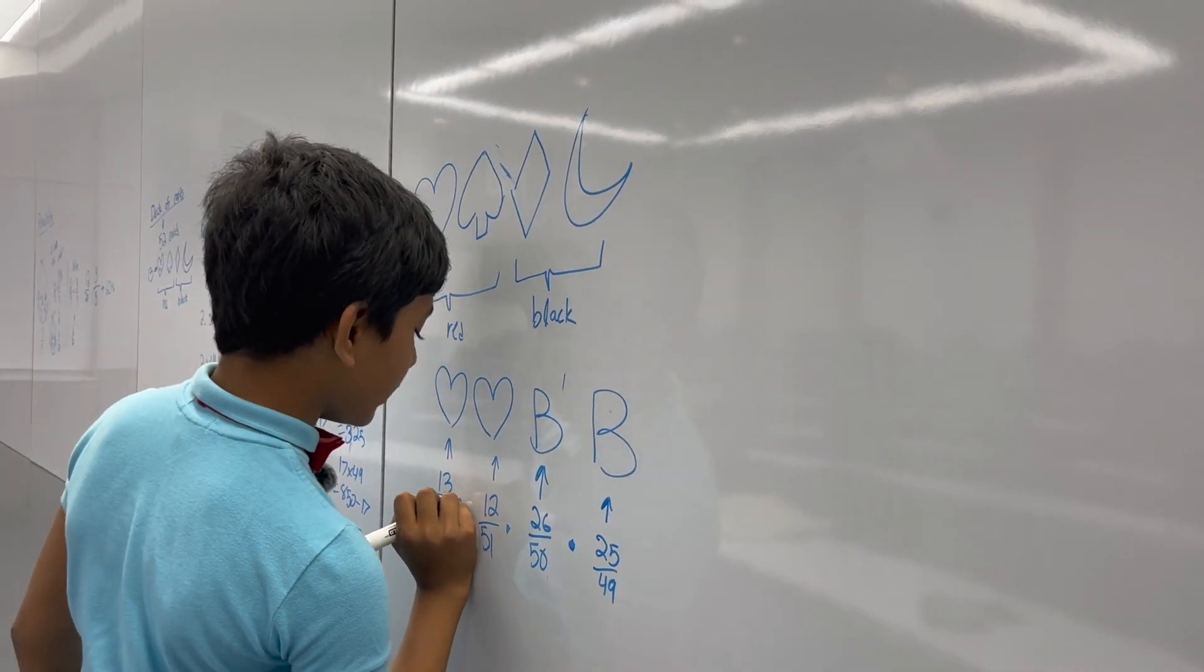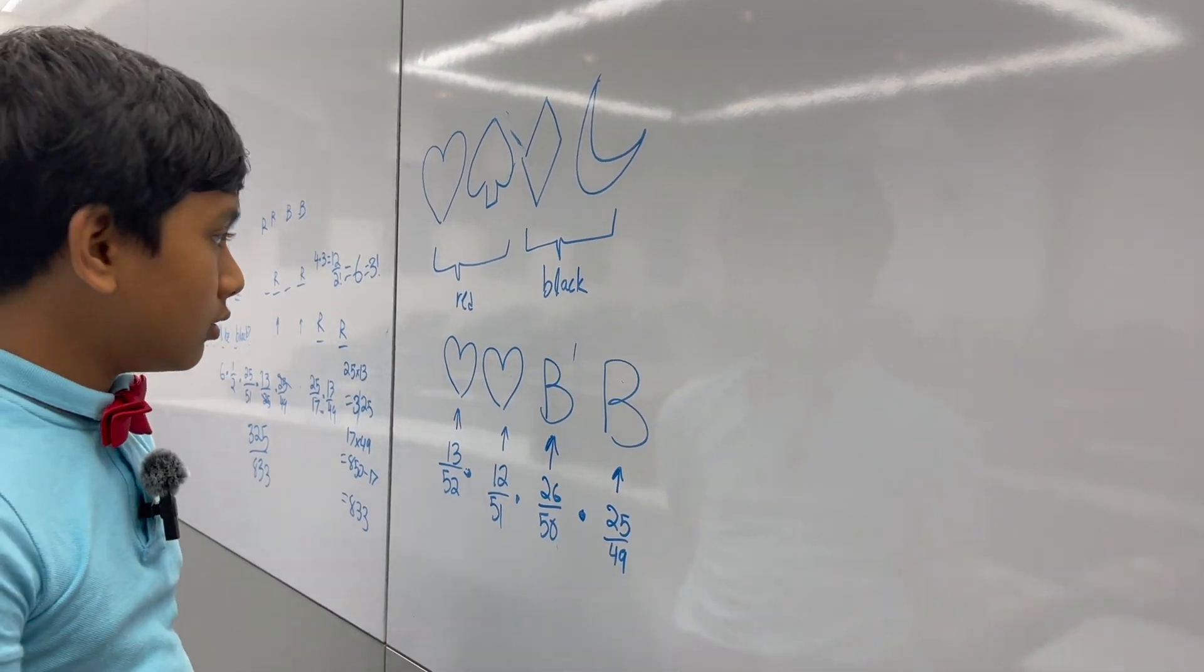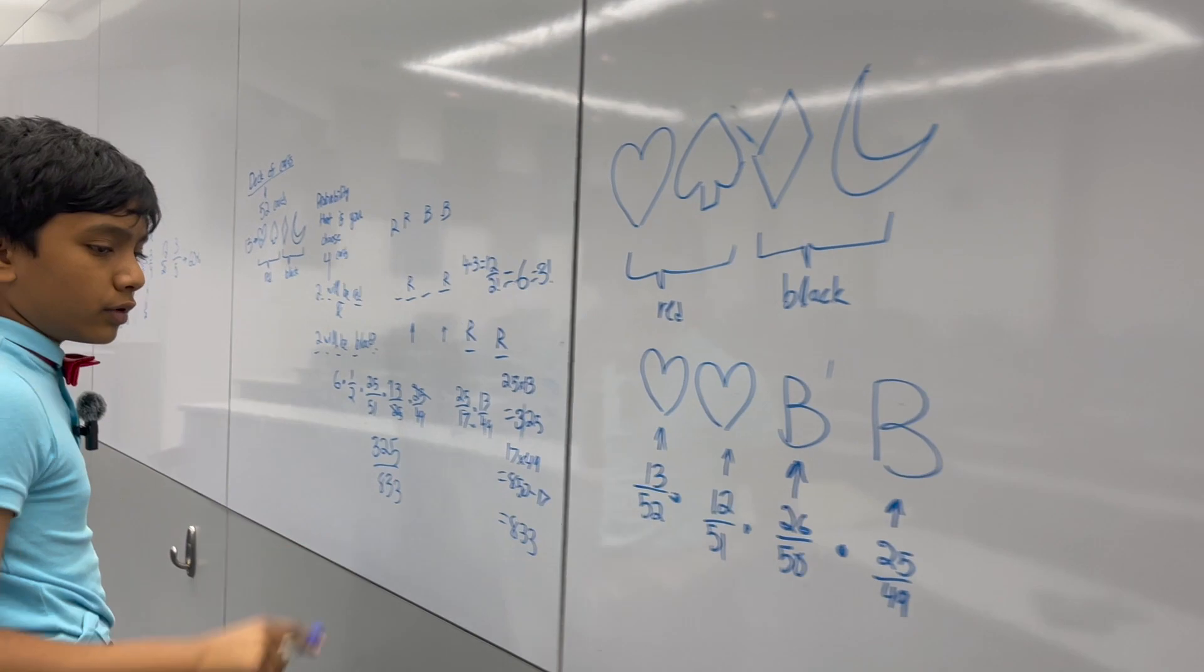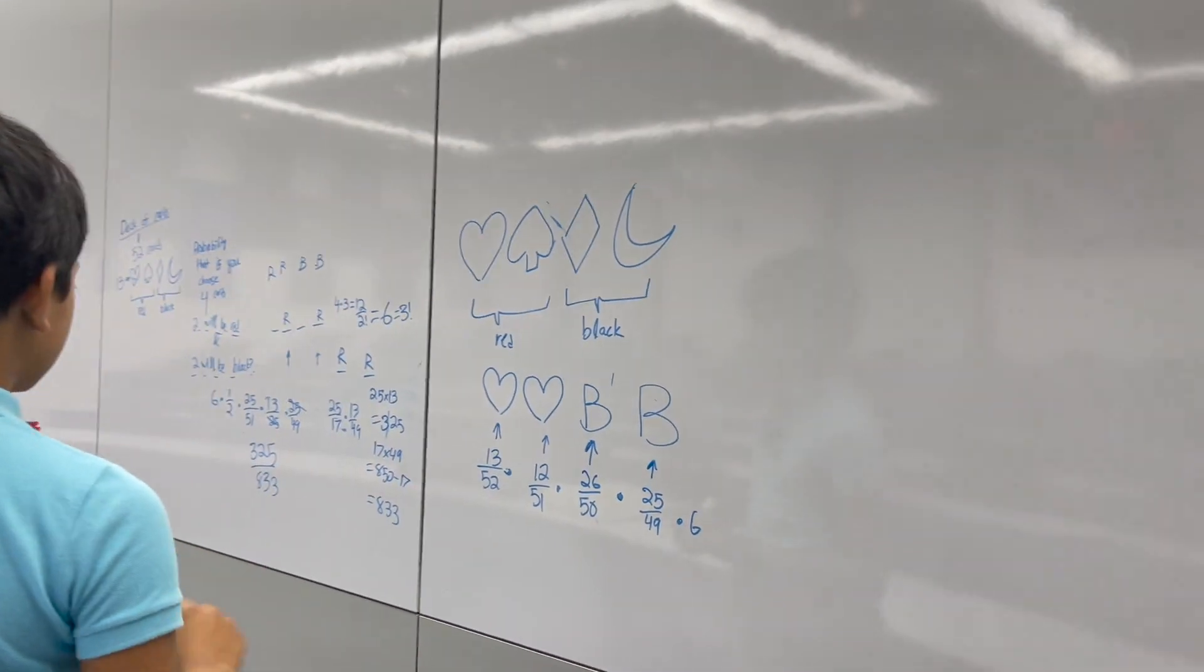So, then how many ways are there to arrange these? Well, that's going to be, well, the same thing that we saw before. 6 or 3 factorial. So, we multiply this by an extra 6.